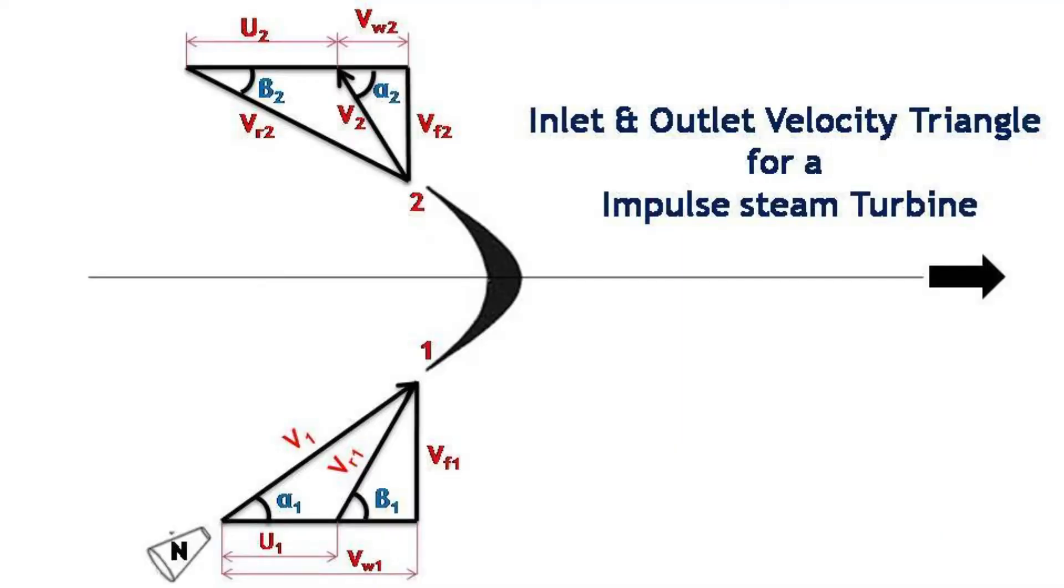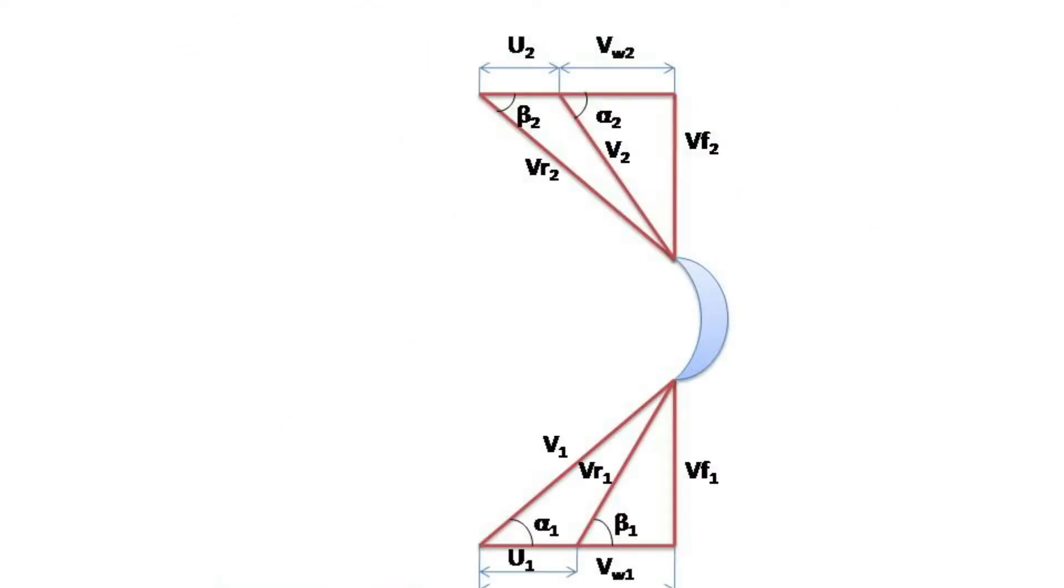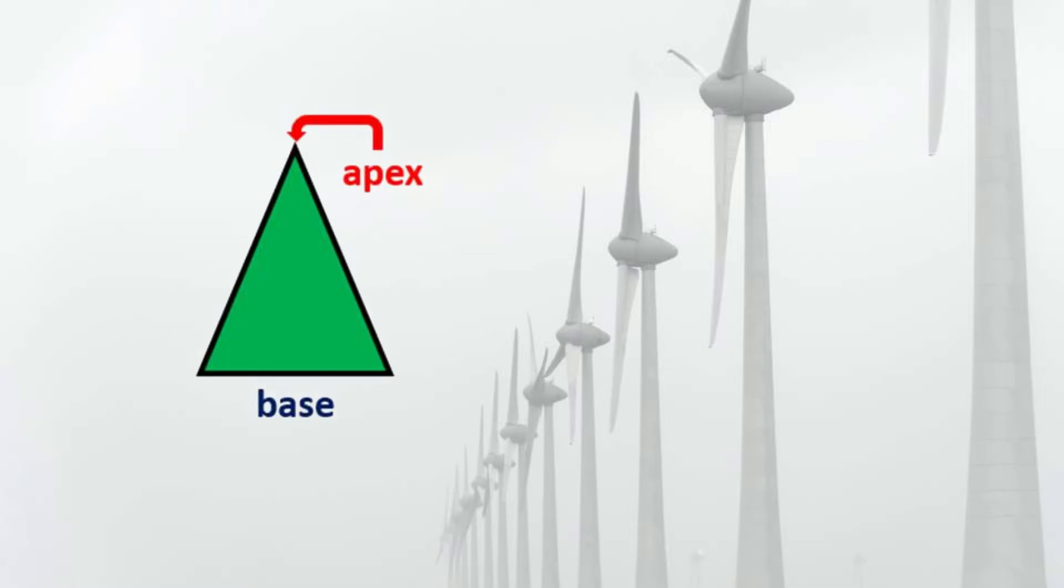This is the final velocity triangle used in the previous video lecture and I have redrawn it like this. In order to combine two velocity triangles, the important thing to be concentrated on is the position of the triangles.